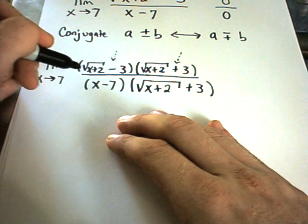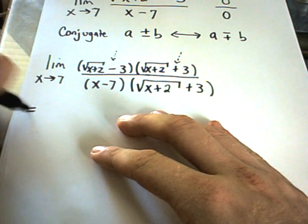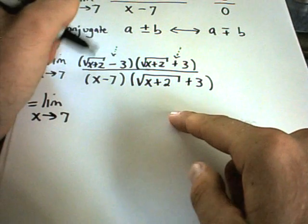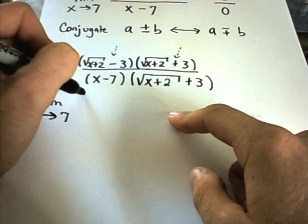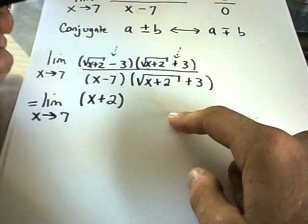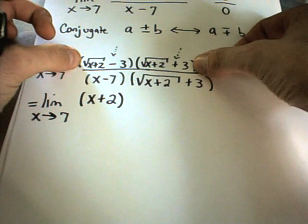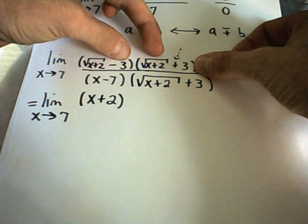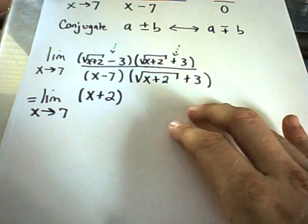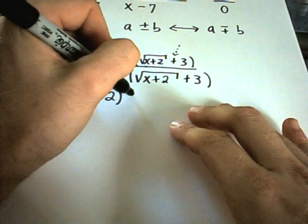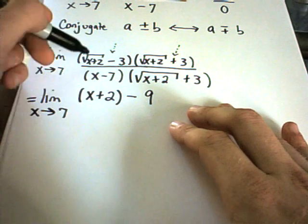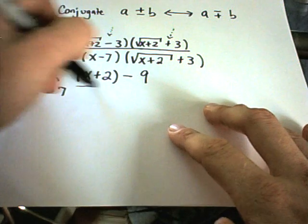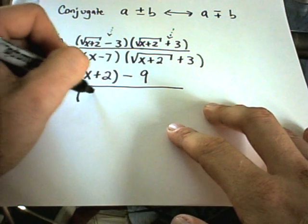Now we're going to simplify the part where we multiplied by the conjugate. I'm not going to multiply the denominator out—it's just extra work. The √(x+2) times √(x+2): the radicals cancel out and you're left with x + 2. Notice on the outside we'll get 3√(x+2), but on the inside we'll get -3√(x+2), and those cancel out. That's the point of using the conjugate. Then I'm left with -3 times +3, which is -9. If you don't see all this, on a separate piece of paper work it out and convince yourself you'll get this in the numerator. I'm not doing anything on the bottom: x - 7.